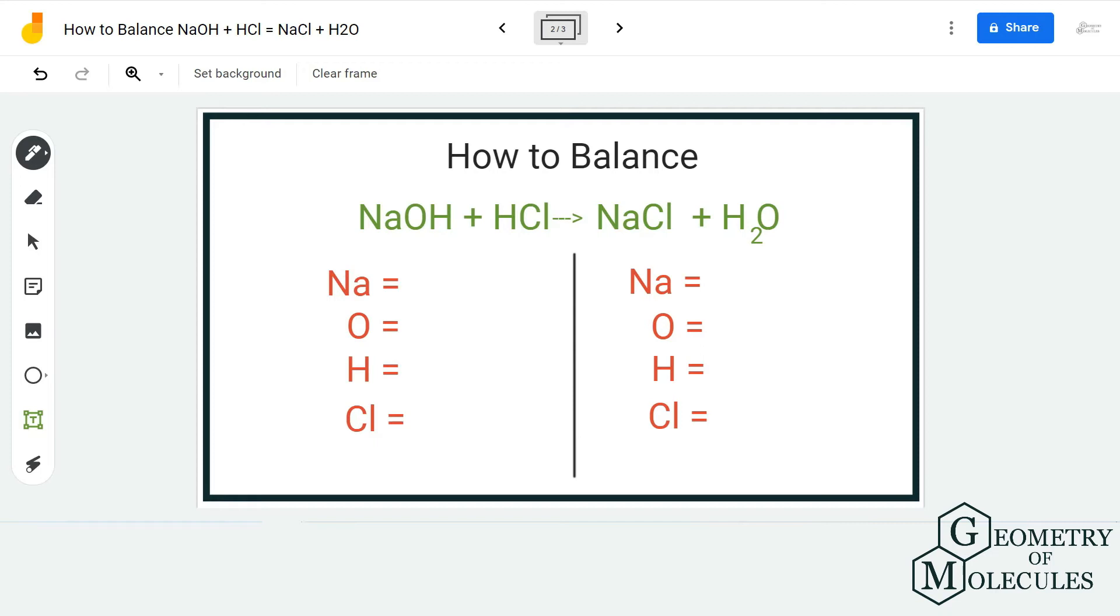Here we have one sodium atom on the reactant side, then we have one oxygen atom on the reactant side. For hydrogen, it is 1 plus 1 equals 2, and chlorine atoms we have one on the reactant side.